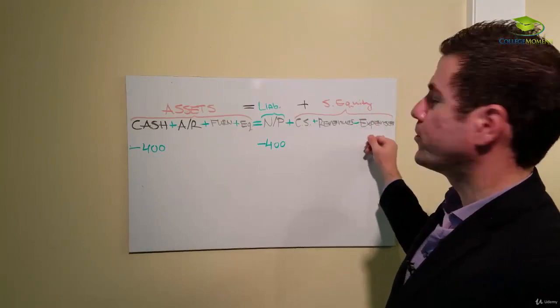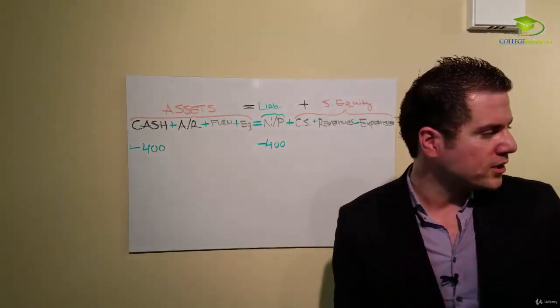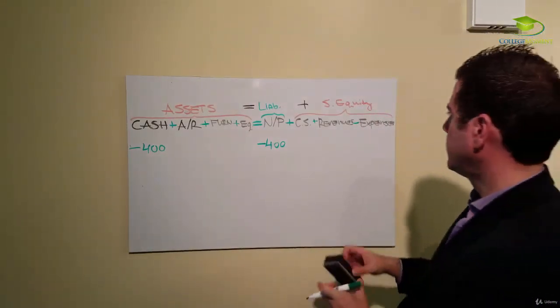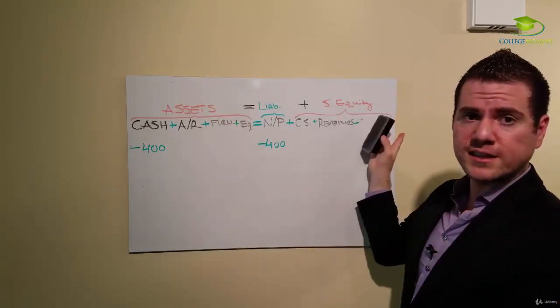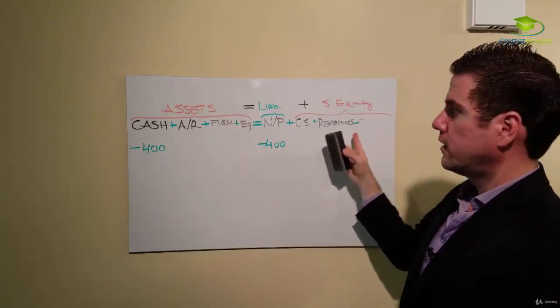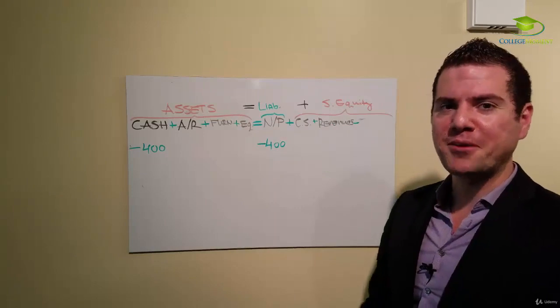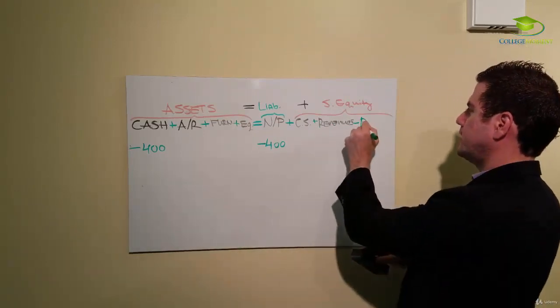And the final transaction, I believe, is we paid dividends. I forgot to write dividends over here, so let me just modify this and instead of expenses, both dividends and expenses need to be here. As you can see, I didn't have space on my table, so let's just add dividends.